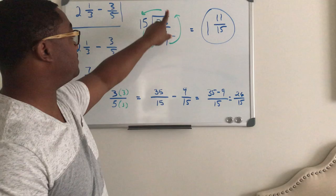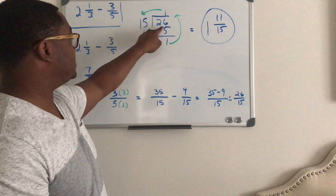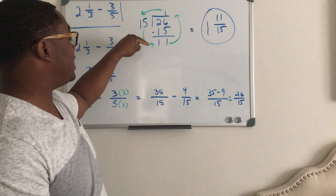So 15 times 2 is 30, so it can't go into 26 twice. It can only go into 26 one time. And so 1 times 15 is 15, 26 minus 15, 2 minus 1 is 1, 6 minus 5 is 1.